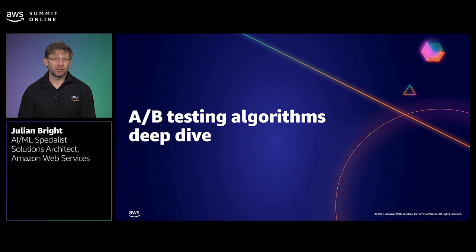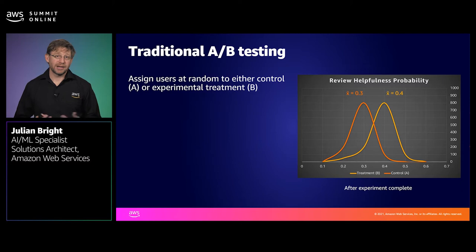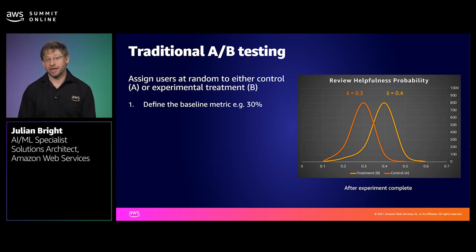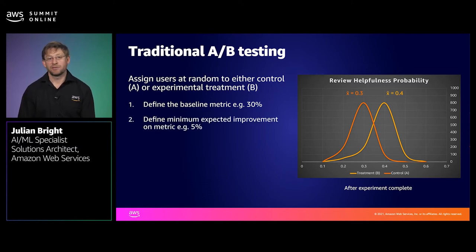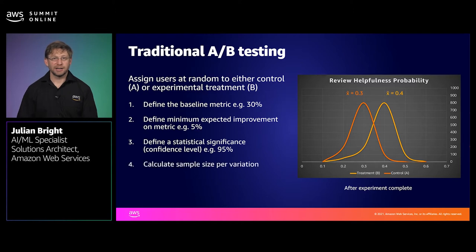In the next section, we're going to deep dive on A-B testing algorithms. To run a traditional A-B test in its simplest form, you need two sets of users assigned at random to either control or experimental treatment in order to improve a business metric — in our case, helpful reviews. Firstly, you define a baseline metric on historical data, e.g. 30% of reviews are rated helpful or click-through when researching a product. You then need to define an expected improvement on your metric — 5% is a common target — and define the statistical significance or confidence interval for the test, which helps quantify whether a result is likely due to chance or some other factor. Finally, you calculate a sample size for each variation and run the test until you have obtained that sample size.